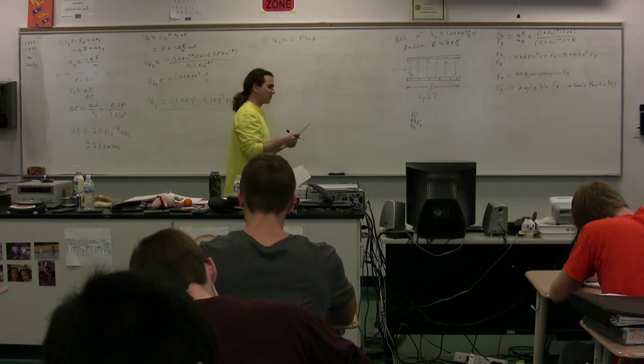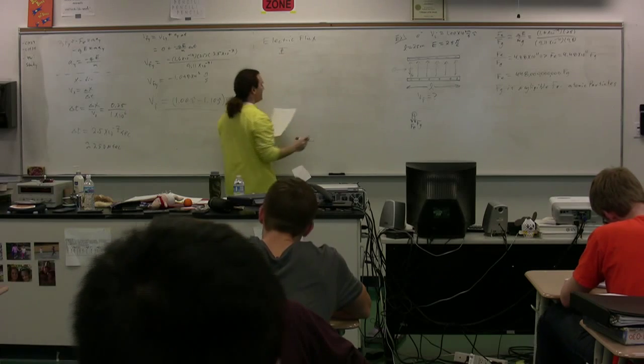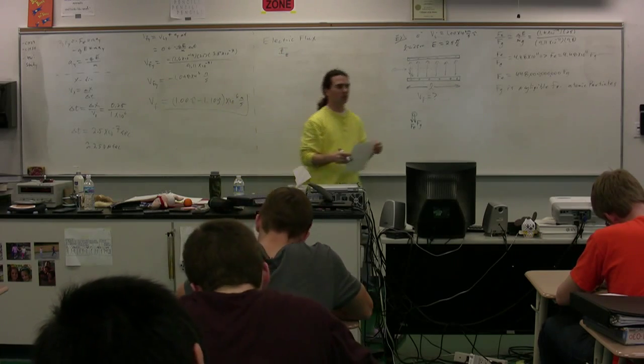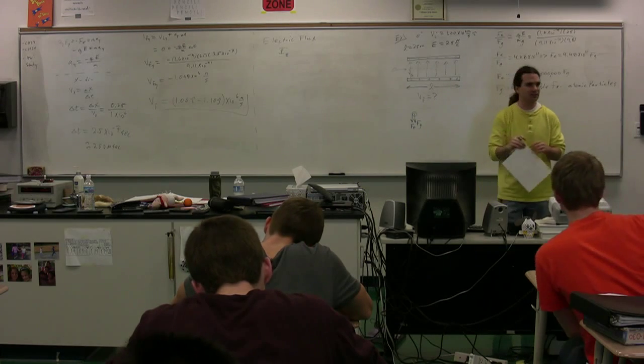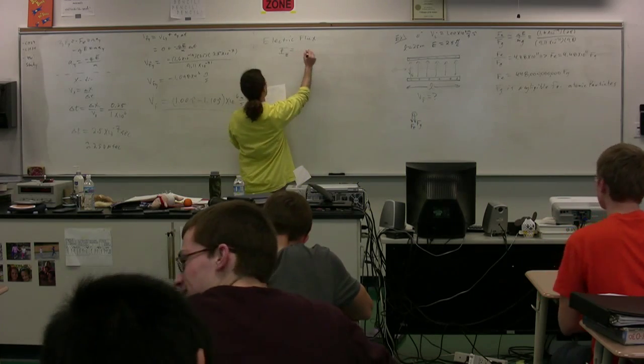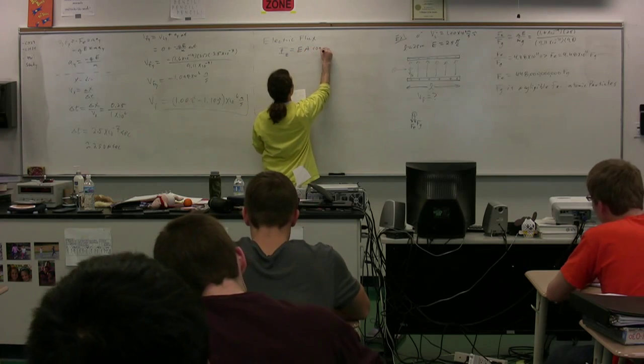The symbol for electric flux is a capital Phi with a subscript of a capital E. And yes, you need it there because eventually we will have also magnetic flux. So this is the electric flux. The electric flux in a constant electric field is equal to capital E times A times the cosine of theta,